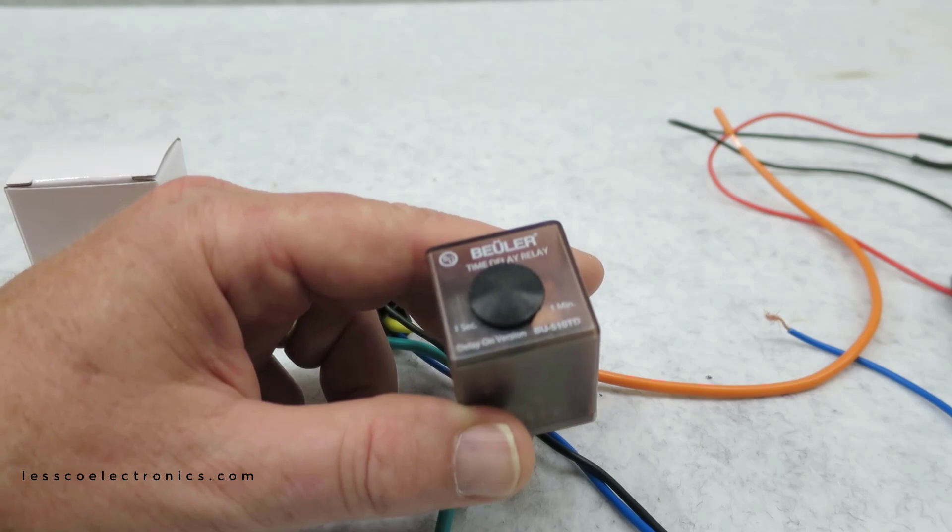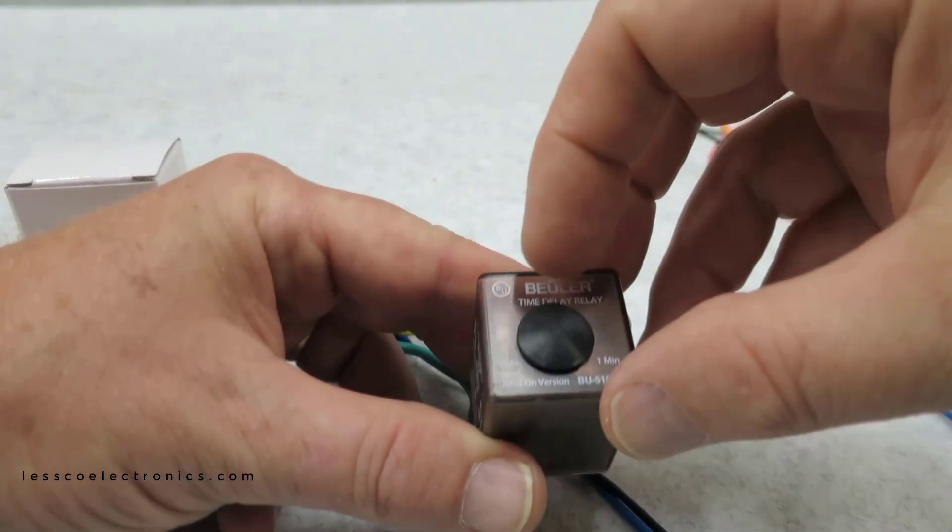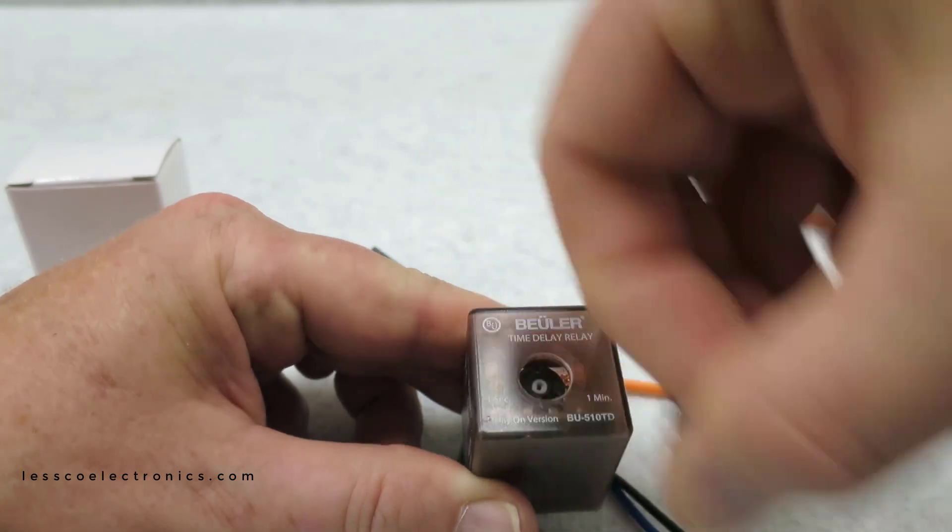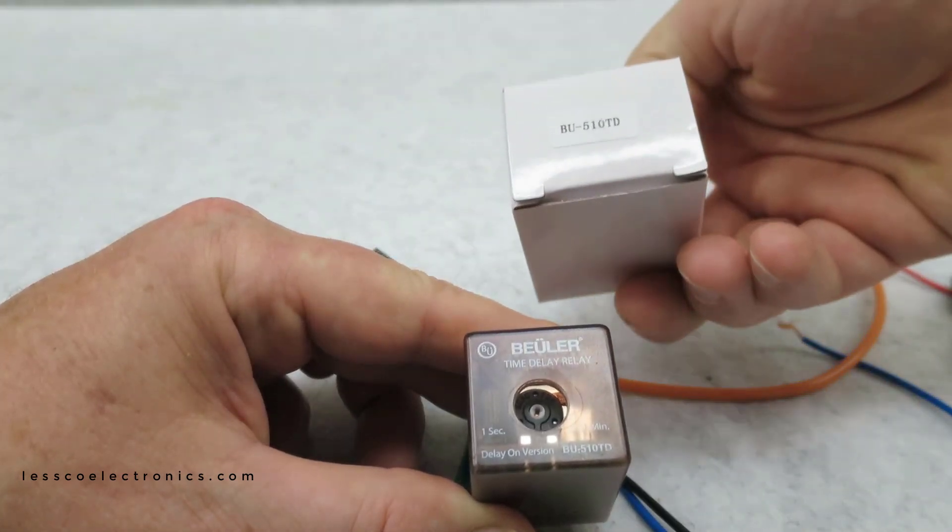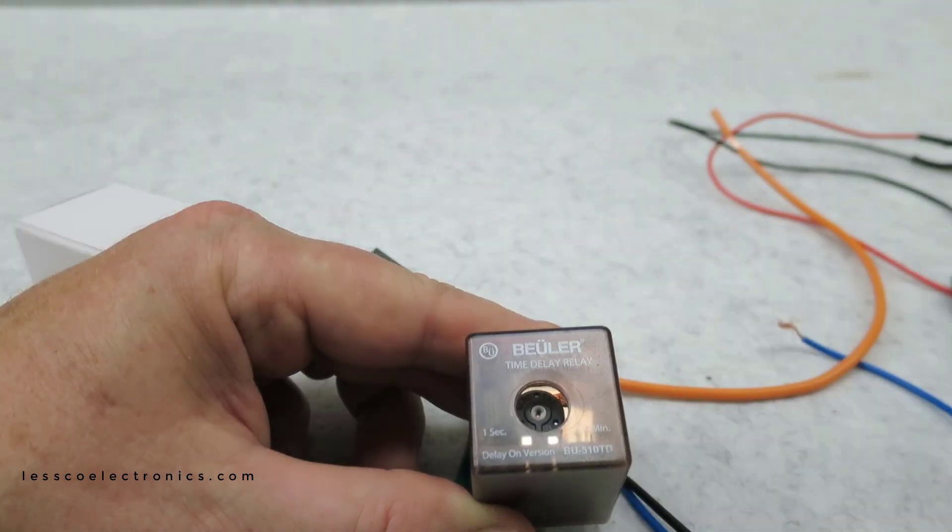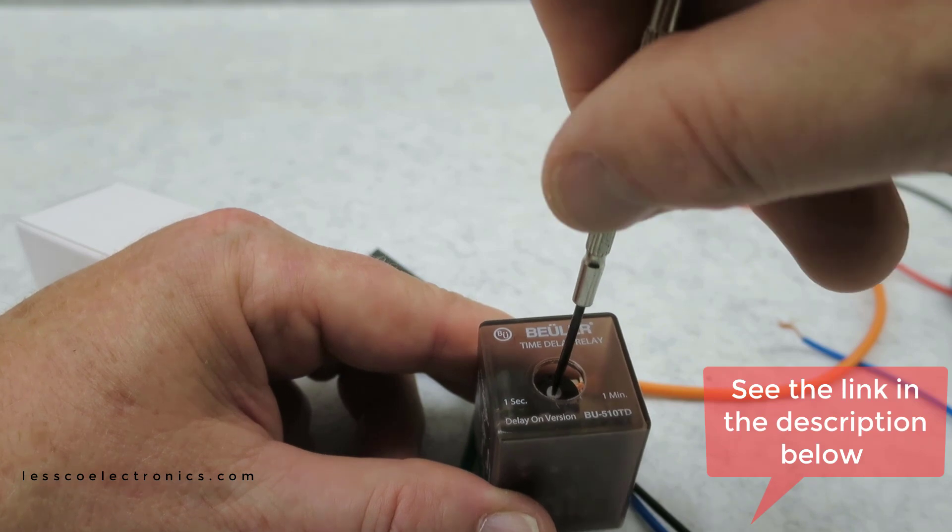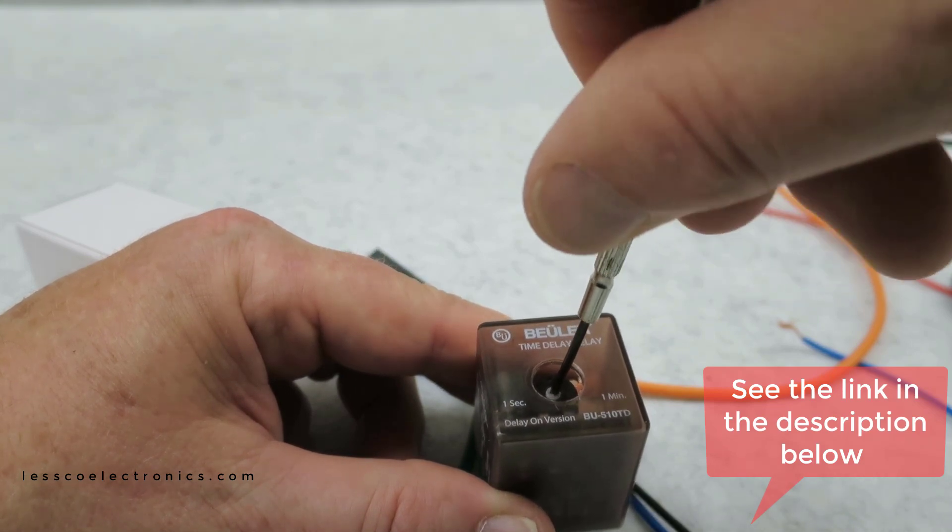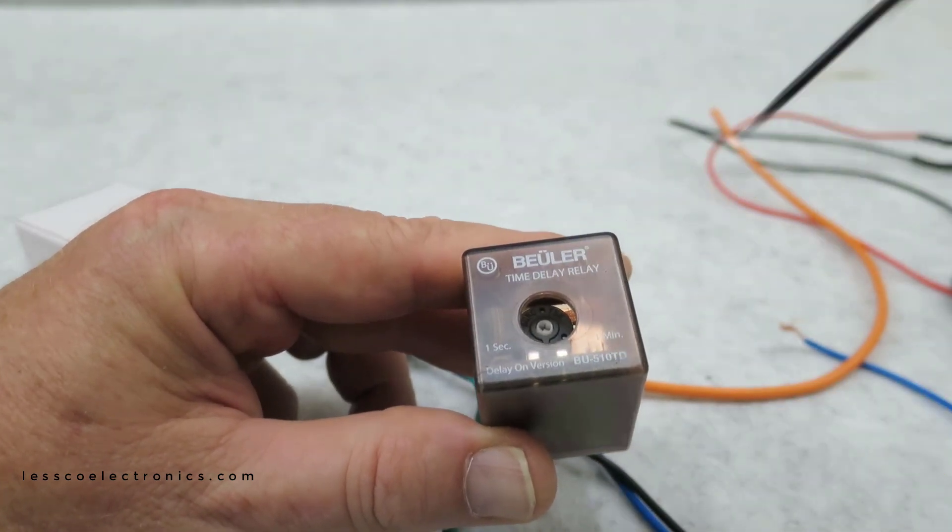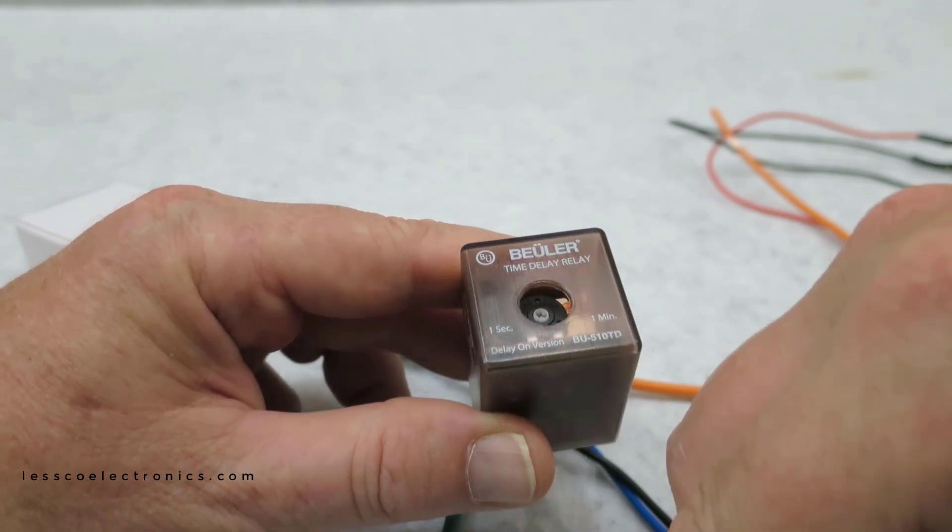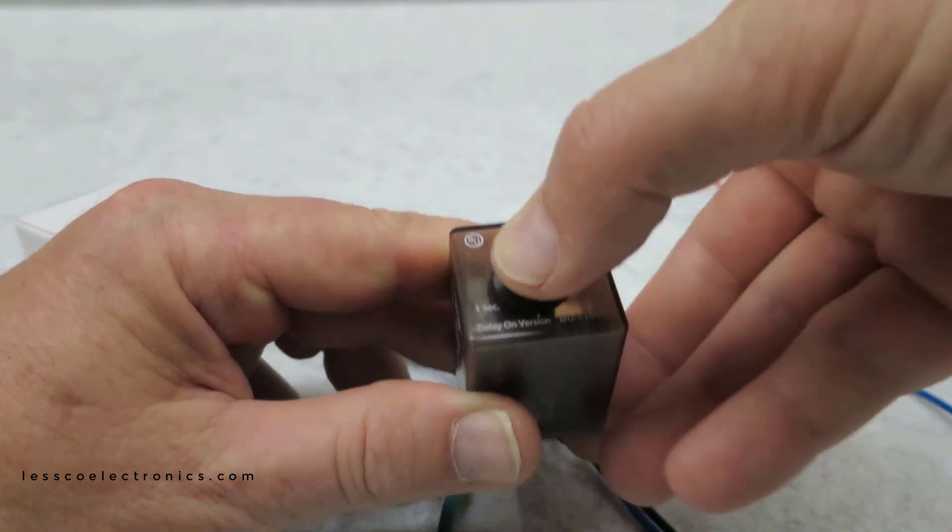Now that is not the case anymore. So this one here is a Bueller relay, which is super cool. I really love this thing and this is a BU-510TD, it's a time delay relay. This one works very much like the old 528T does, except it's got an even smaller, simpler to use potentiometer to adjust from one second to one minute. That's even an extension from the 528T, that's even longer.